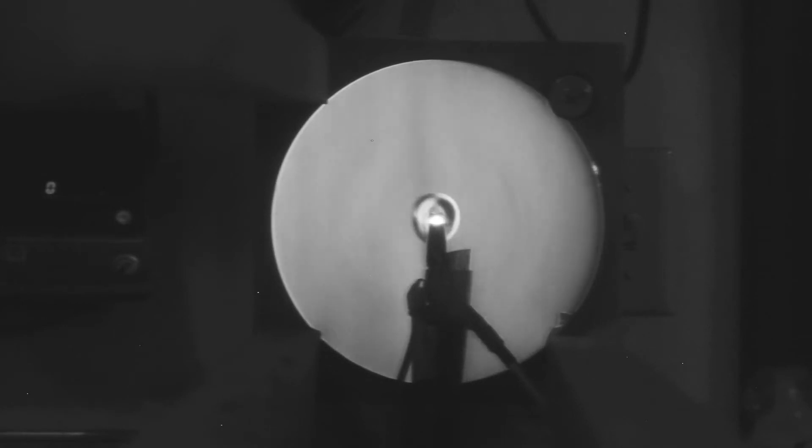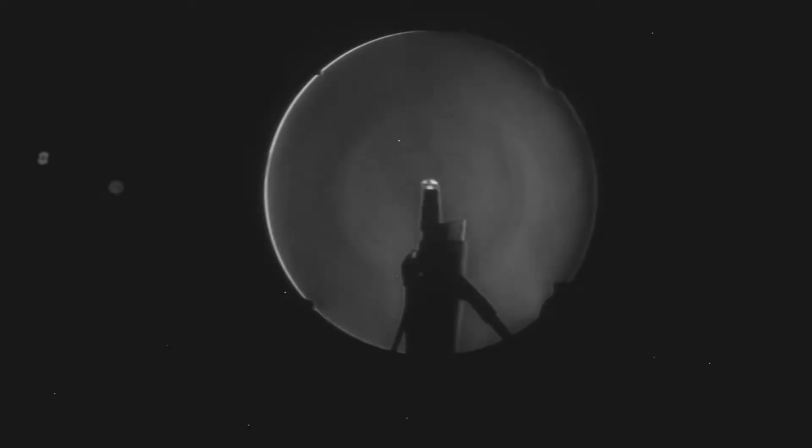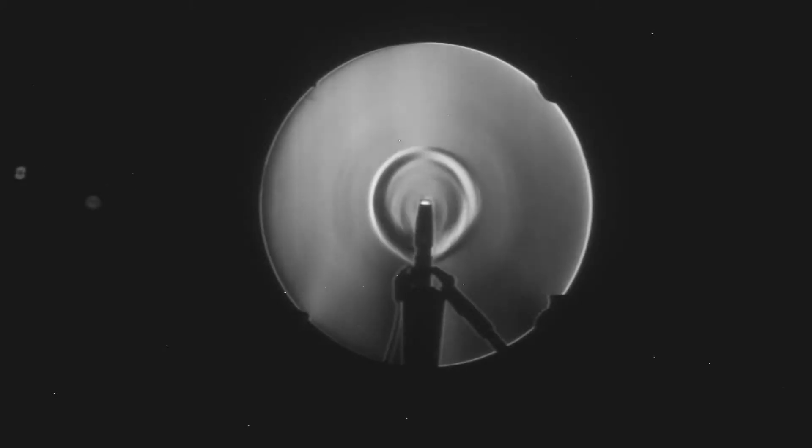So here are sound waves coming from an electric spark. They're viewed with Schlieren photography so that you can see the disturbances in the air. It causes slight changes in index of refraction.